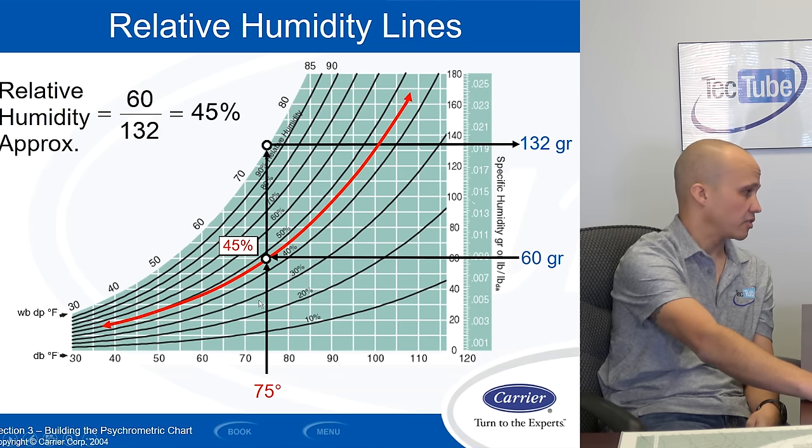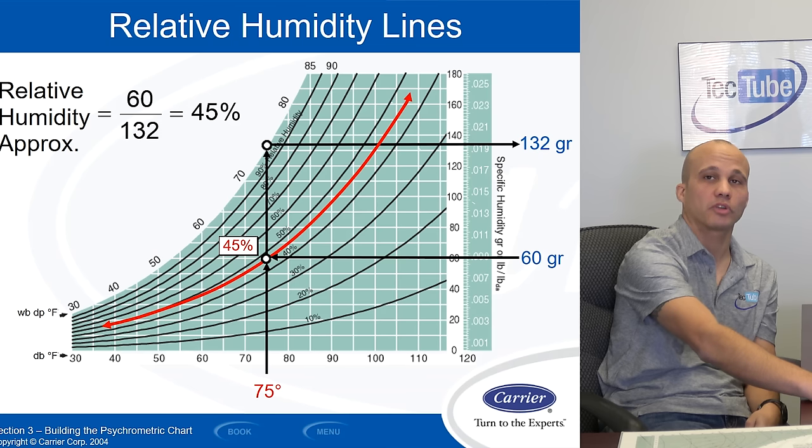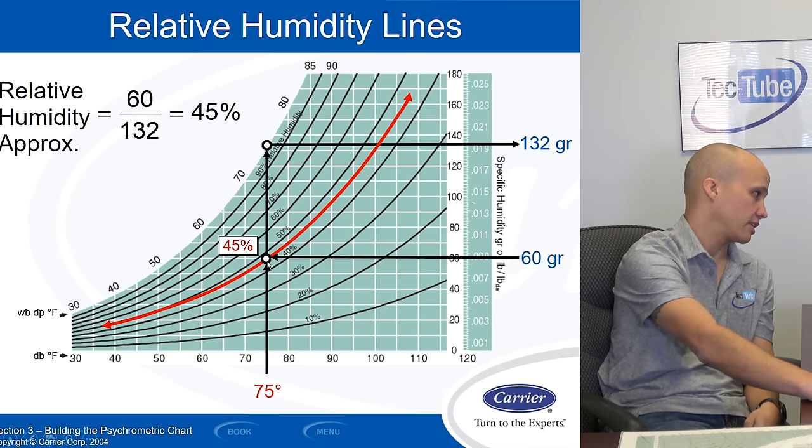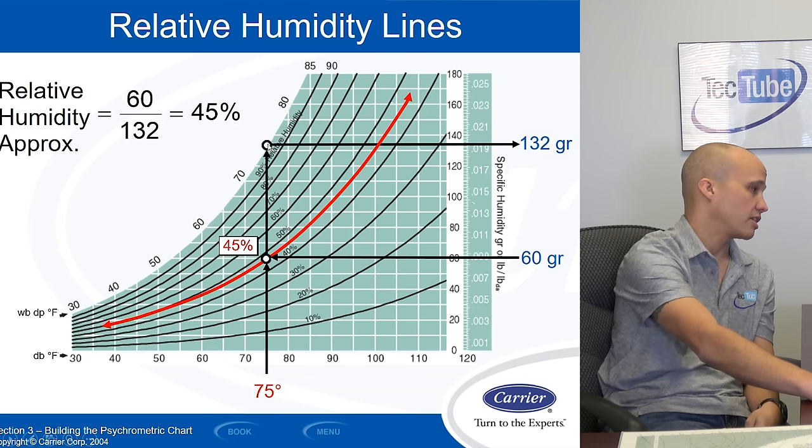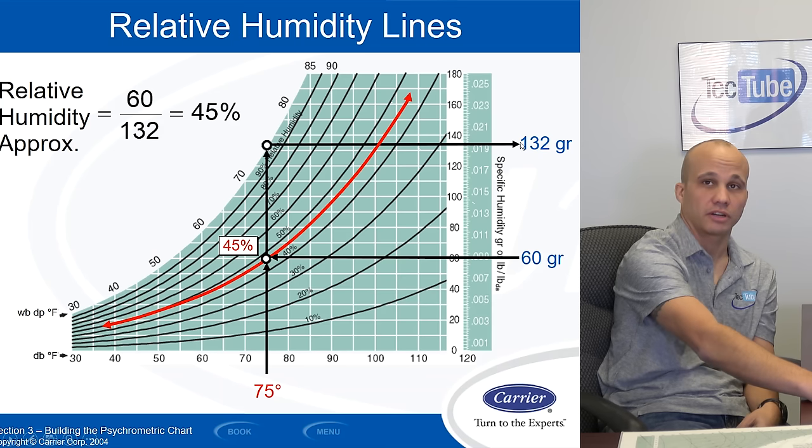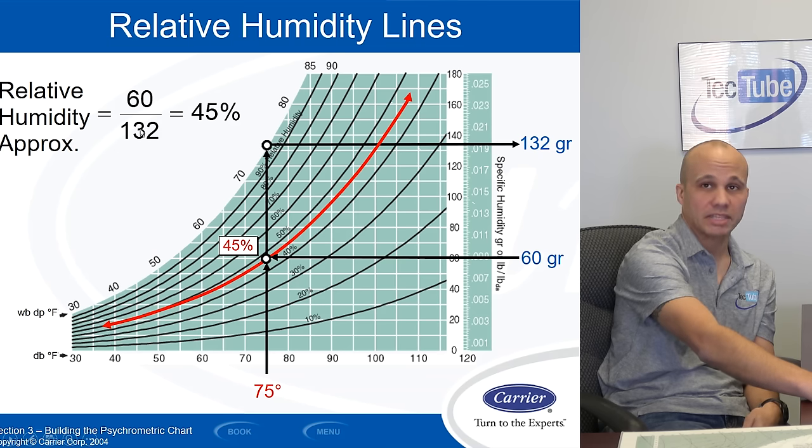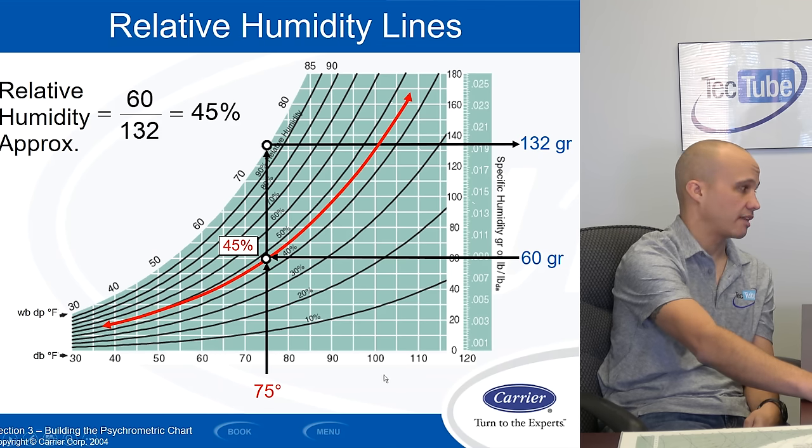So I want to figure out the relative humidity. I got my 75 and 60 grains. If I draw the line straight up and say, well, at 75 degrees, how much moisture could I hold before there was a condensation problem at 75 degrees? So go all the way up to 100% humidity. And I read it across, I could hold 132 grains of moisture. But I only have 60. So I have 60 out of a maximum of 132. That's 45% relative humidity. So that's how I'd be reading that.